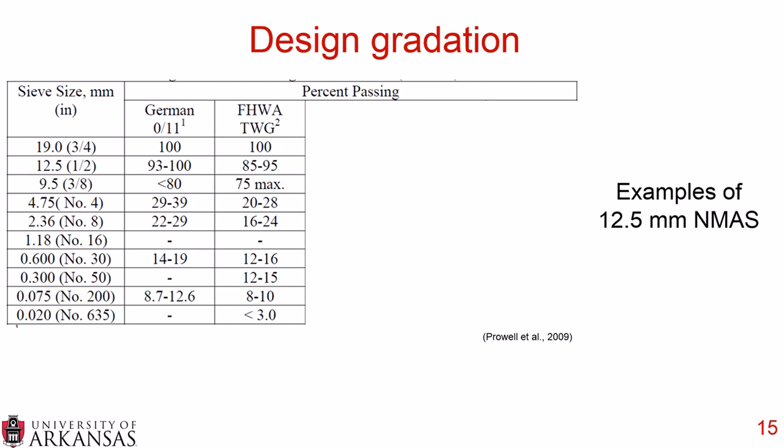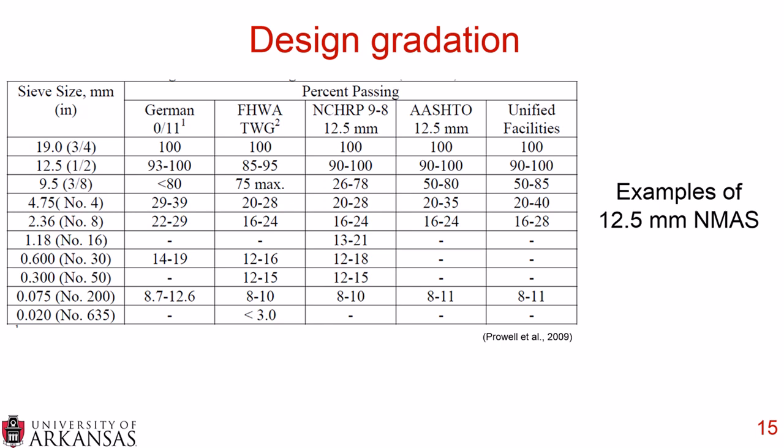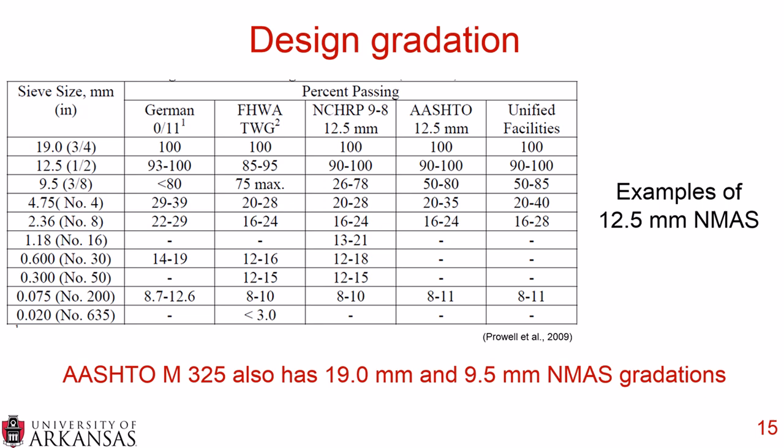Similar gradations are seen from NCHRP, AASHTO, and Unified Facilities work — all showing that big gap between the No. 4 and the 3/8-inch sieve, separating coarse from fine aggregate. This is just an example for a 12.5 mm nominal maximum aggregate size. AASHTO M325 includes gradations for 12.5 mm as well as 19 mm and 9.5 mm nominal maximum aggregate sizes.